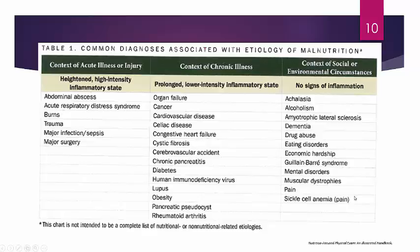Many different disease states are associated with malnutrition. This chart is not necessarily comprehensive, but it gives an idea of the types of disease states you may see associated with malnutrition. Things related to malnutrition generally involve some degree of inflammation, and you see some of those disease states reflected here. This chart is not required for memorization but provides context for patients who may have malnutrition.